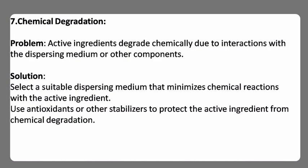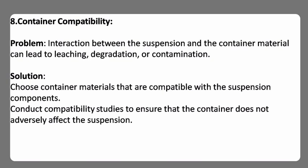Seventh, chemical degradation — active ingredients degrade chemically due to interactions with the dispersing medium or other components. Solution: select a suitable dispersing medium that minimizes chemical reactions with the active ingredient, and use antioxidants or other stabilizers to protect the active ingredient from chemical degradation. Eighth, container compatibility — interaction between the suspension and the container material can lead to leaching, degradation, or contamination. Solution: choose container materials that are compatible with the suspension components and conduct compatibility studies to ensure the container does not adversely affect the suspension. Thanks for watching this video — if this was helpful, please subscribe to the channel.